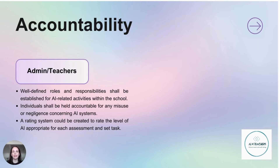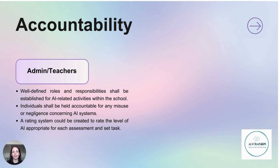I would suggest that with different assessment pieces you give students a rating scale of how much AI they're allowed to use for each assessment, and when the assessment is given it's clearly labeled what AI is being used for. For example: is AI being used just for a grammar check, or can you use higher-level AI to help develop a draft of your assessment? Creating a scale of what AI use is appropriate for each assessment task is a practical approach.